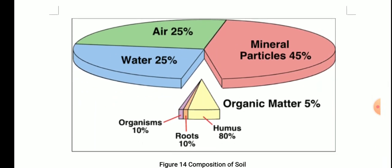This pie chart shows the composition of soil. Out of 100 percent: 25 percent is air, 25 percent is water, and 45 percent is mineral particles. The remaining 5 percent is organic matter.